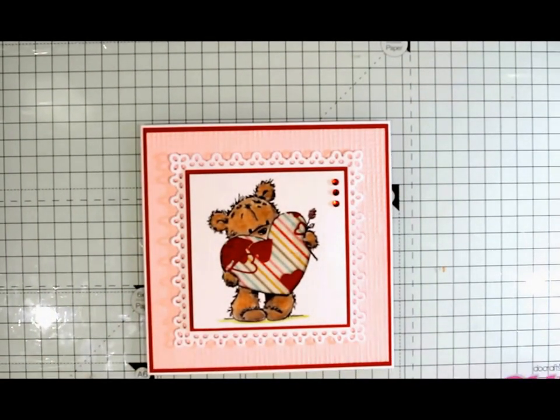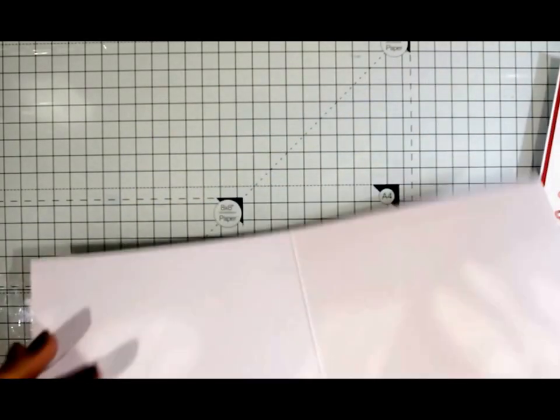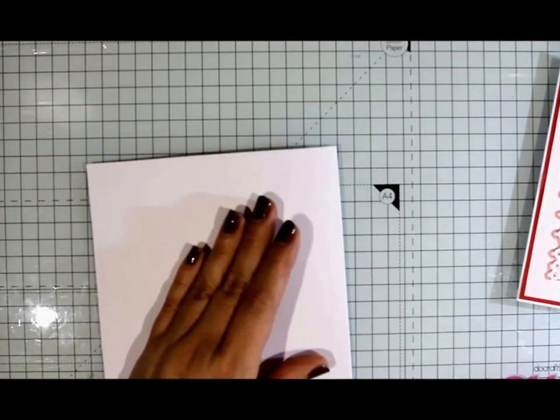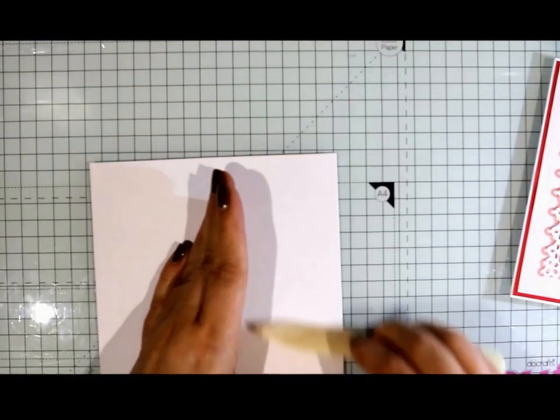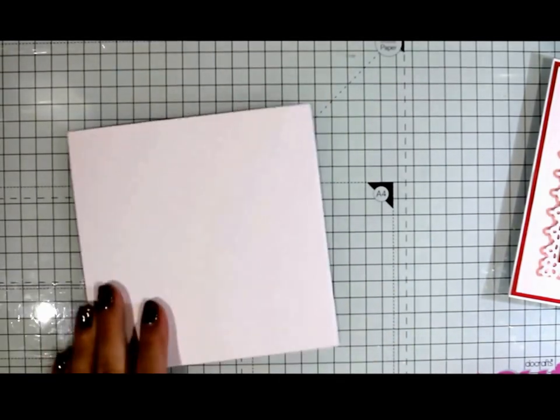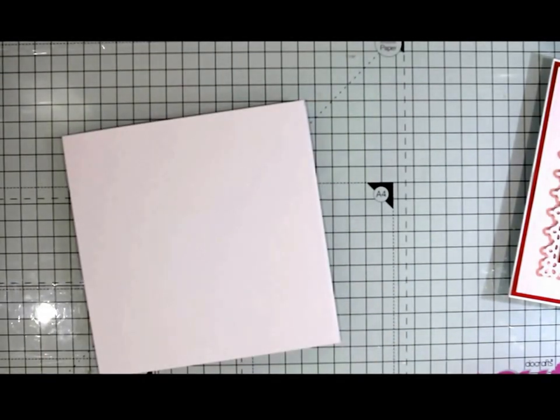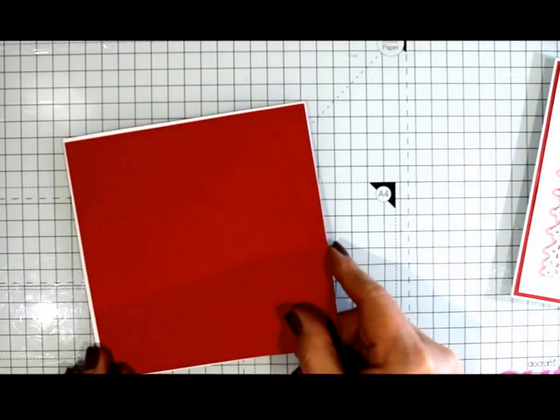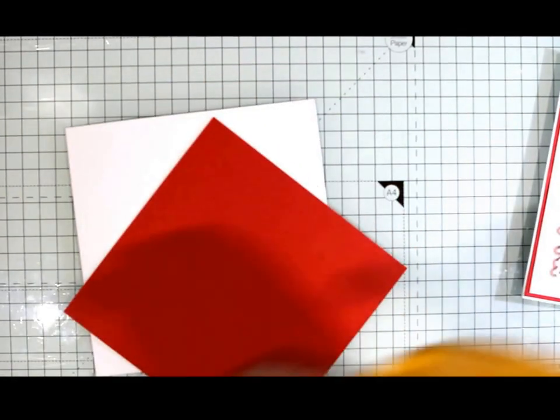We're going to start with our card base. It's a pre-made card base from Craftwork Cards. We're just going to fold it in half and bone fold the edge. The next piece you need is a piece of red cardstock which I've cut down to 14 and a half by 14 and a half square. I'm just going to stick that on the front.